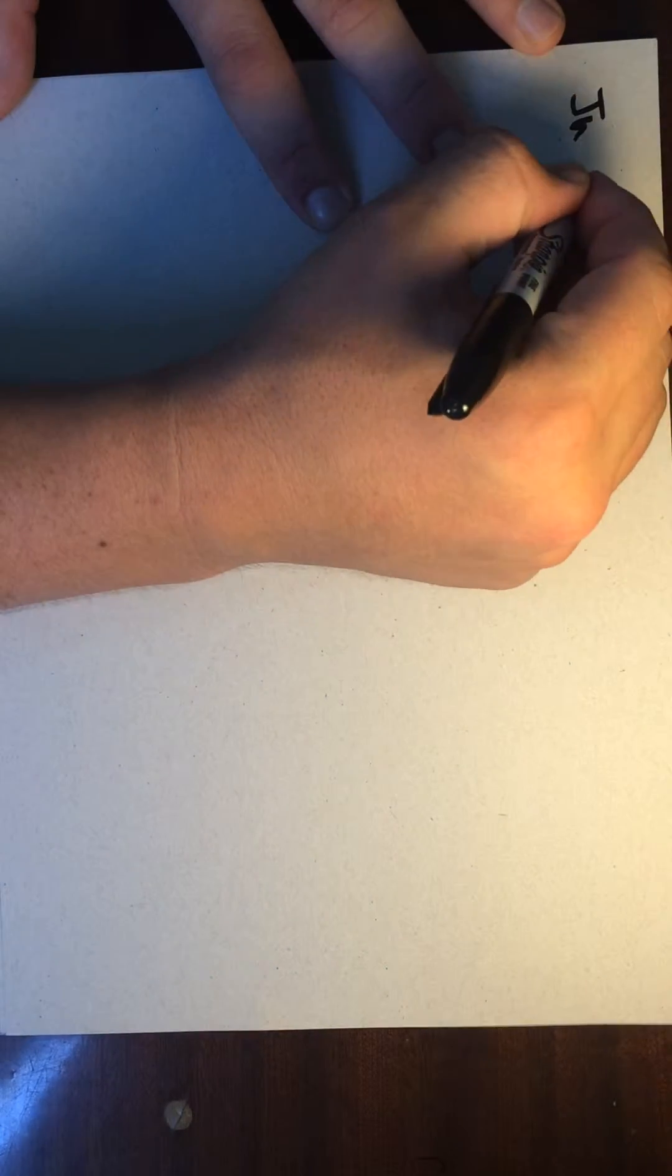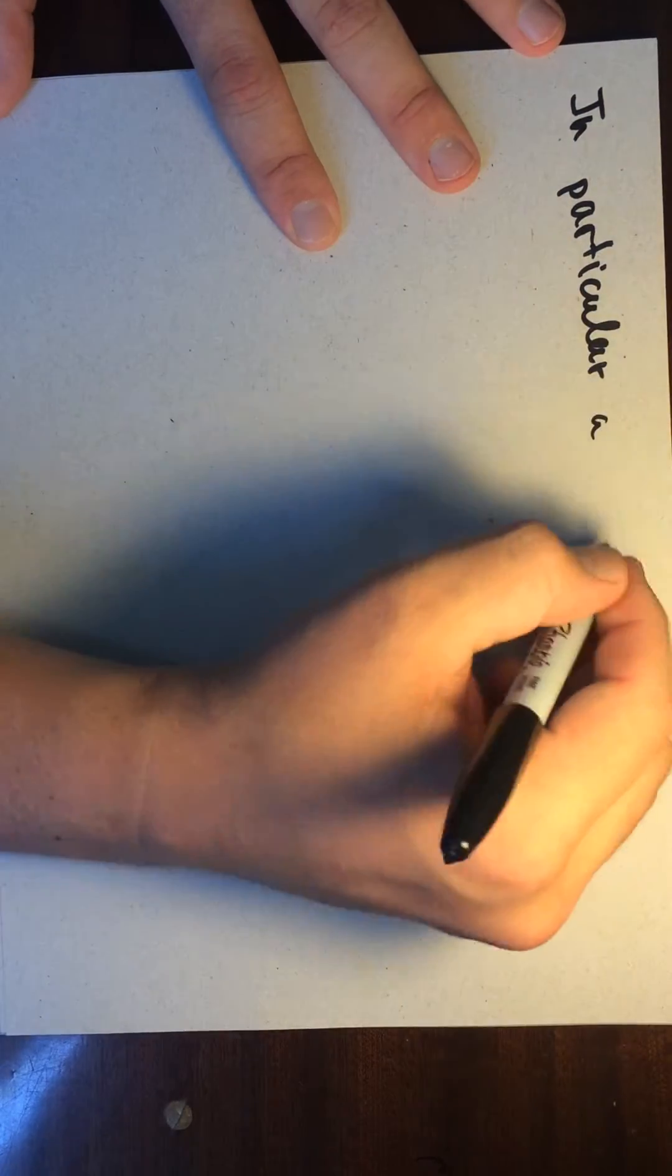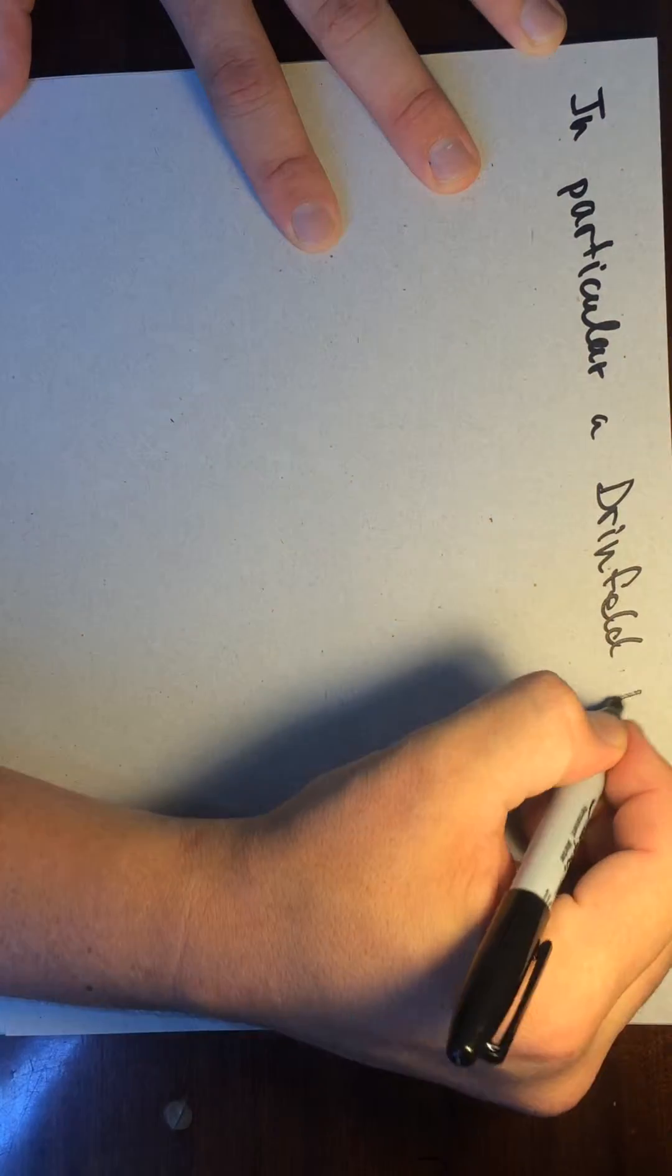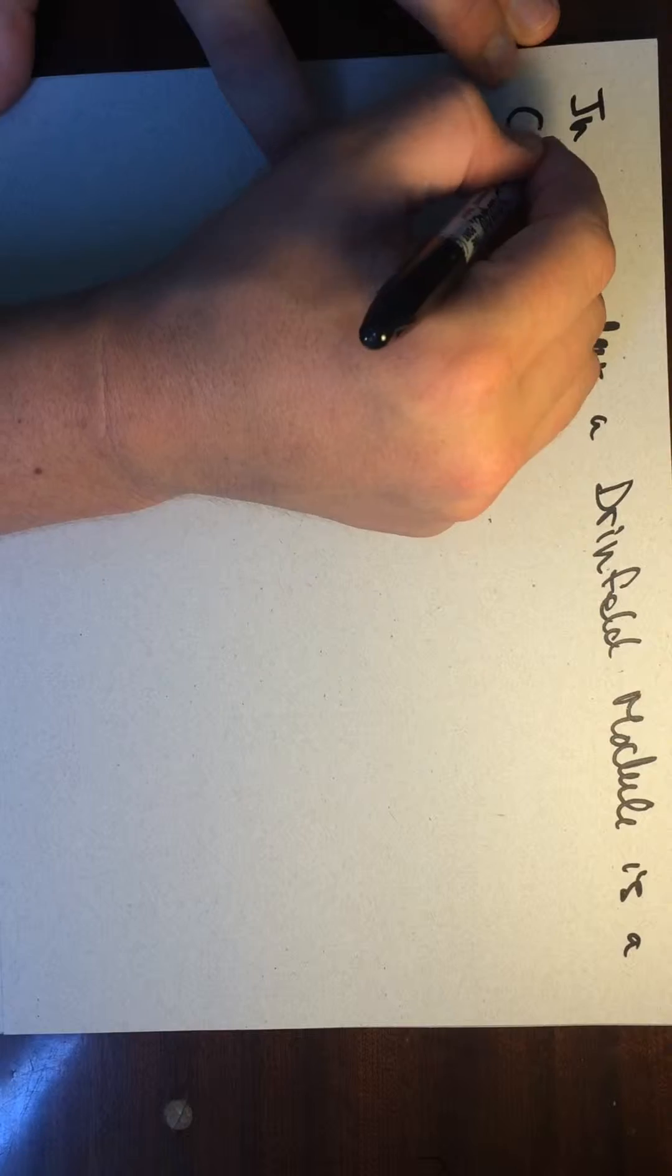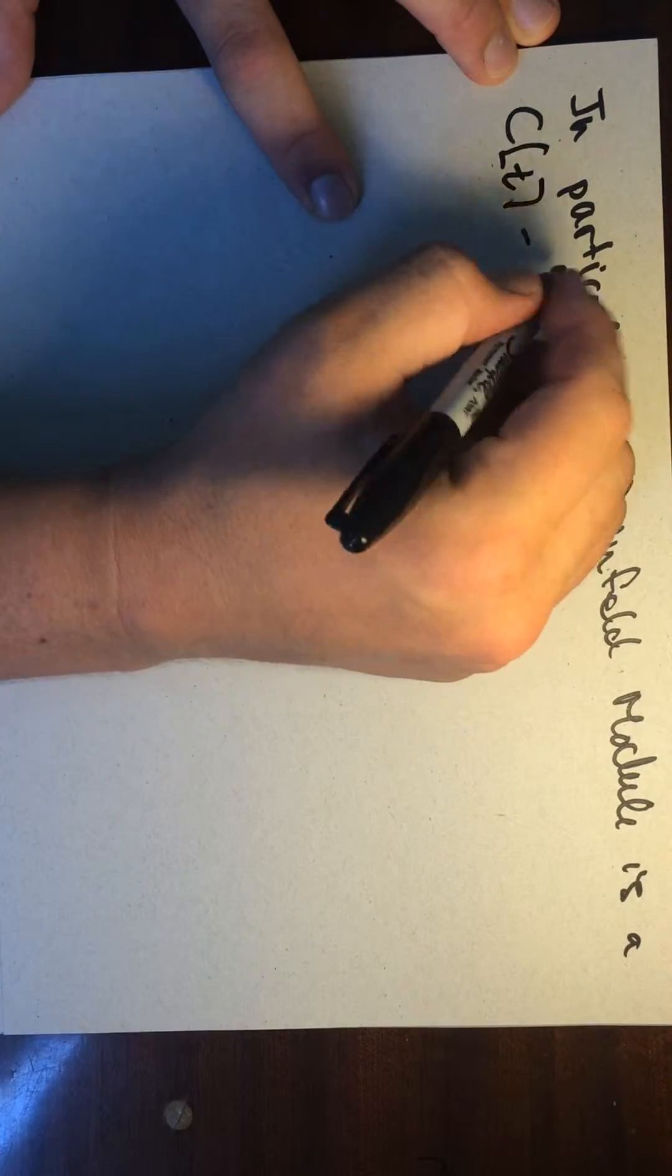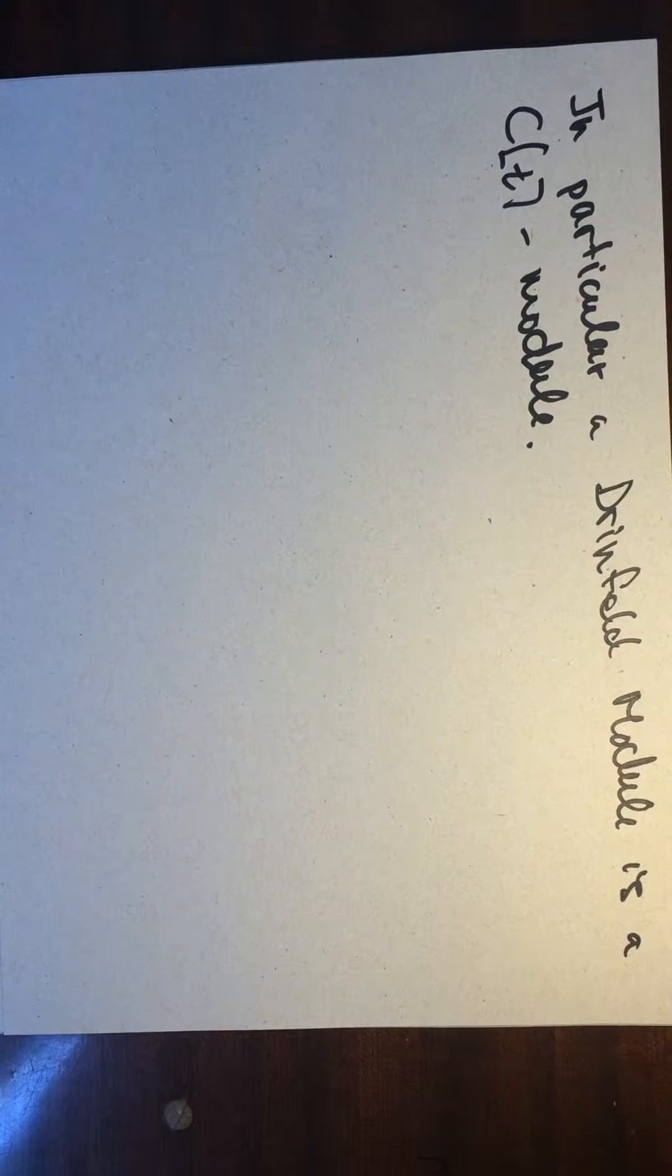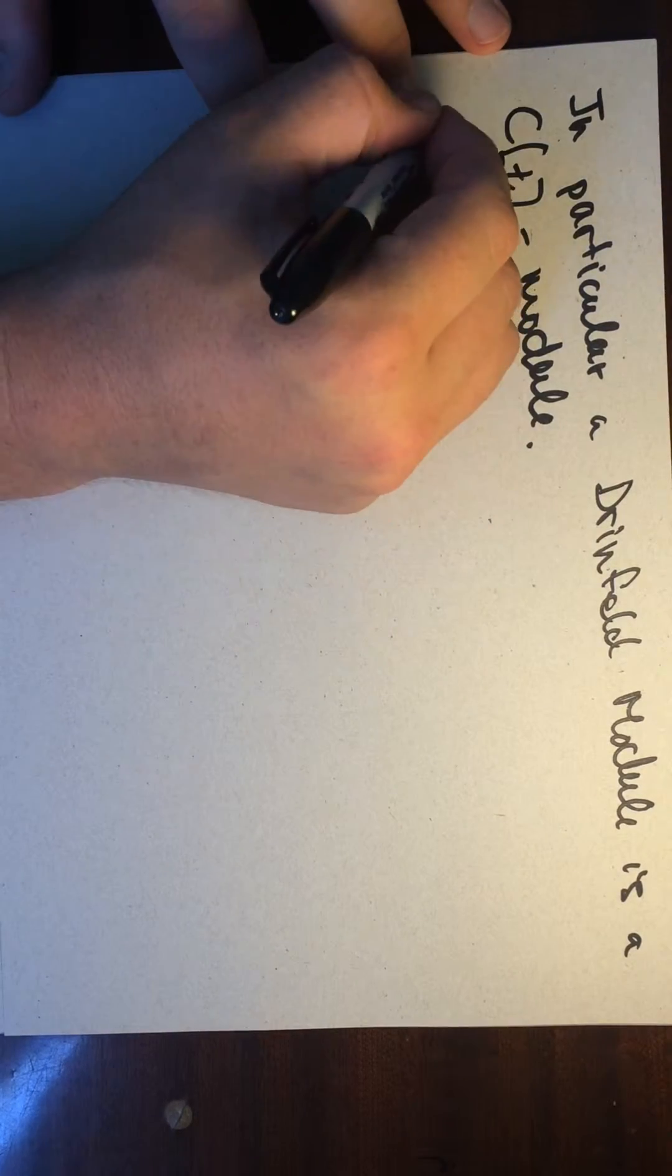In particular, a Drinfeld module is a C[t] module. Okay. So let me give some examples. Oh, I have to tell you what a morphism is. Okay. So, definition.